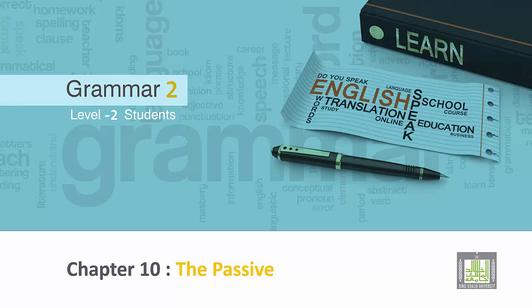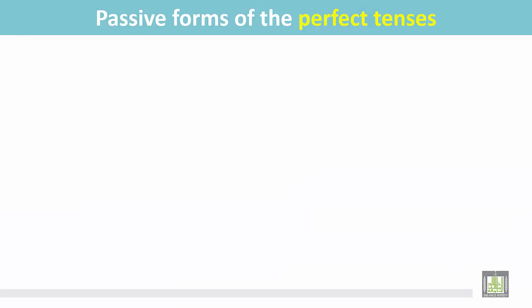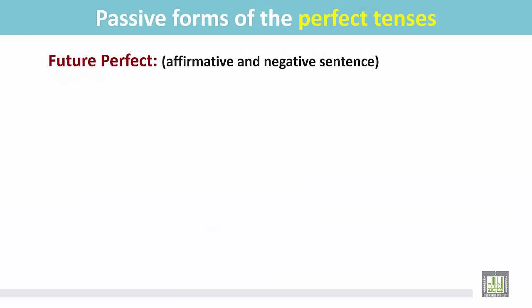Grammar 2 for Level 2 students. Chapter 10: The Passive. Passive forms of the perfect tenses — future perfect, affirmative and negative sentences.